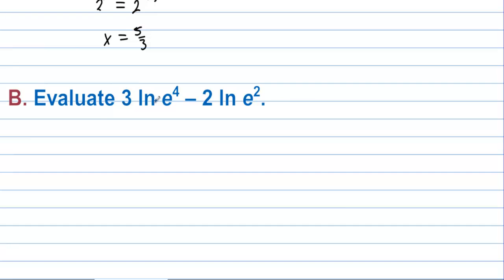Evaluate 3 ln(e⁴) minus 2 ln(e²). The natural log and base e cancel out, so we have 3 times 4 minus 2 times 2, which is 12 minus 4. That evaluates to 8.